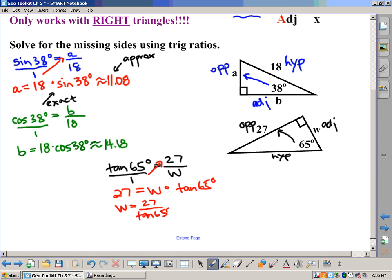That's the exact answer. And if you grab your calculator and punch in 27 divided by tan 65, you should get about 12.59 units. So those are the other trig ratios. You now know not only tangent, but sine and cosine as well.